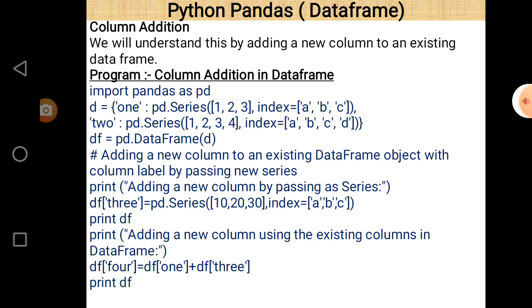The first operation is column addition. We can add a column in an existing DataFrame. The first line is 'import pandas as pd', which is essential for execution of the program. PD is the alternative name given to pandas, so whenever you want to use pandas as a library, just write pd in place of pandas, followed by the dot sign and the name of the function.